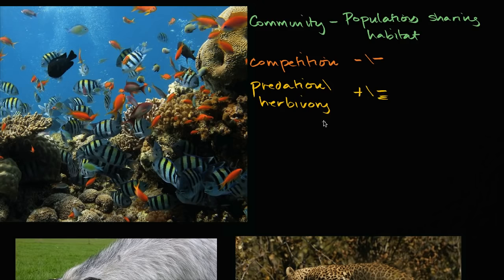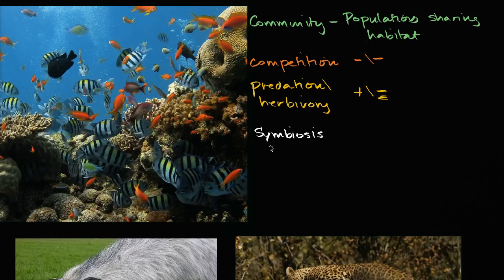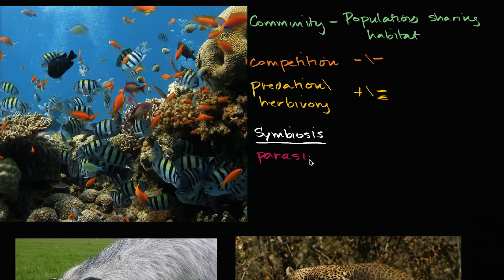The next types of interactions involve long-term, fairly intimate interactions, where organisms often live with each other or even on each other. The general term for organisms that have these long-term intimate interactions is symbiosis. Now in everyday language, people often use symbiosis to mean organisms that really benefit each other. But technically, symbiosis isn't just about benefiting each other — it could involve hurting each other, or one benefiting while the other doesn't care. There are several types of symbiosis; the first is parasitism.